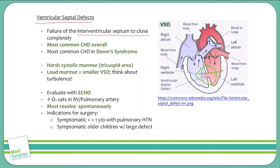A really high-yield concept is that VSD is the most common overall type of congenital heart defect. If you're talking about a patient with Down syndrome, it's also the most common type of congenital heart defect in a Down syndrome patient, and we know that Down syndrome patients do tend to have a variety of different congenital heart defects.